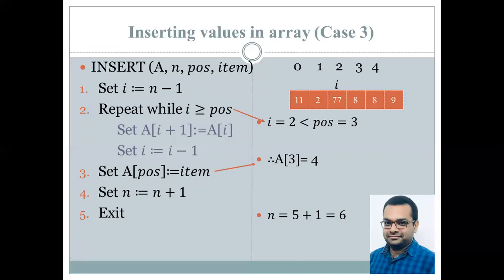over here, the value of i is 2, which is less than the value of the position. Therefore, the test fails and the loop exits. Therefore, A of pos, that is A3, gets the value of the item that needs to be inserted.